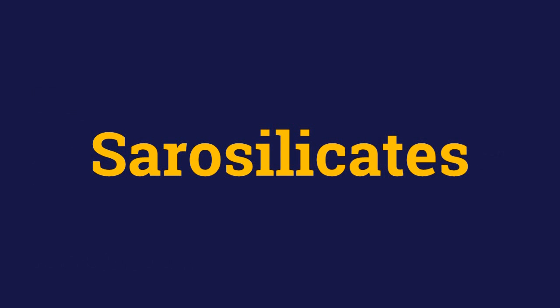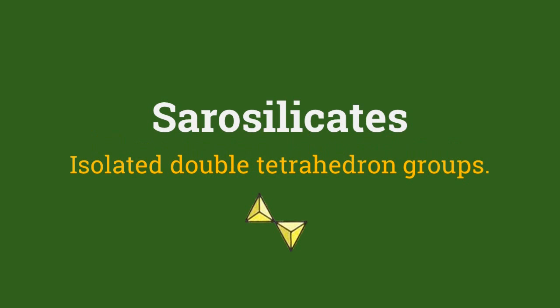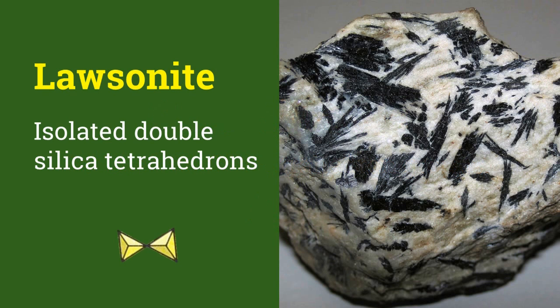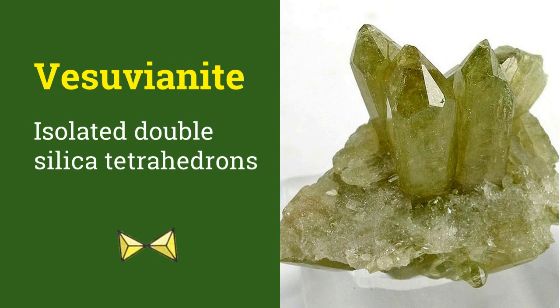Next we have the sorosilicates. They have pairs of isolated tetrahedrons. Sorosilicates are formed by sharing of apical oxygen atoms between the tetrahedrons. The paired silicon tetrahedra in all sorosilicates result in Si2O7 groups. Glosonnite, a sorosilicate, is a rare mineral found in blueschist, a kind of metamorphic rock. In this mineral, Al plus iron links pairs of silicon tetrahedra. Other minerals like vesuvianite, also called idocrase, and epidote may contain both SiO4 and Si2O7 groups.